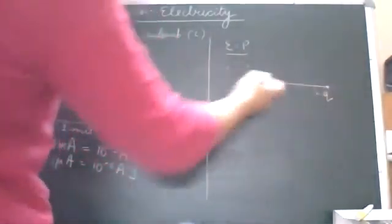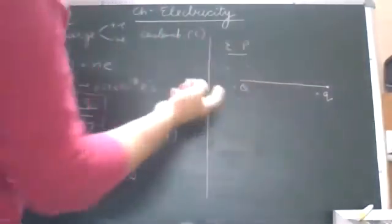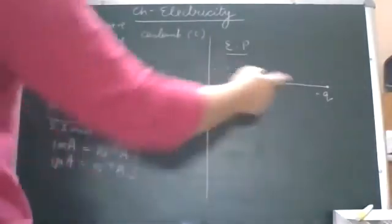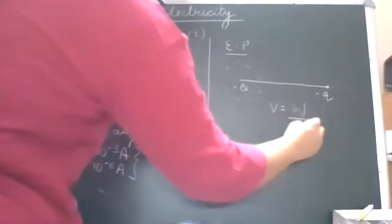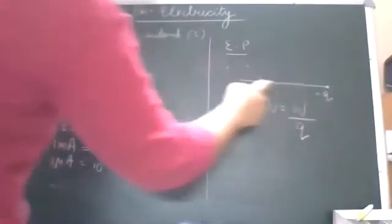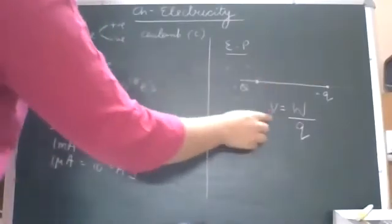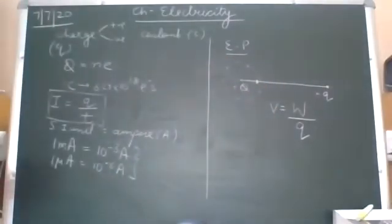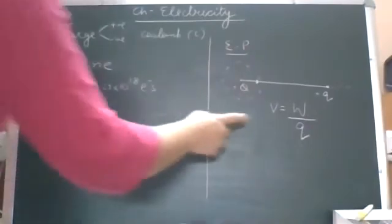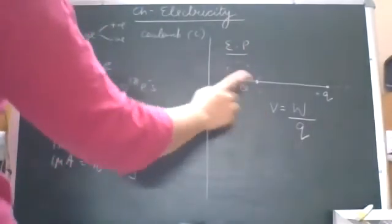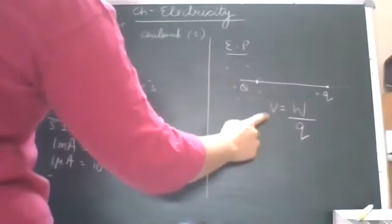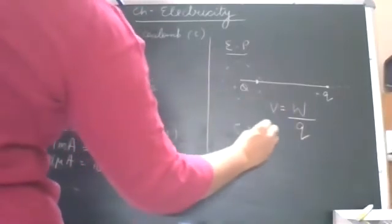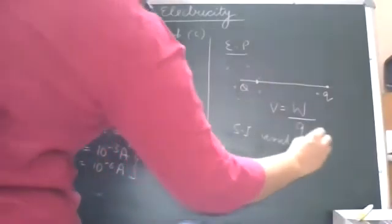So the electric potential is defined as how much work has to be done on the unit charge when it comes from infinity. The potential symbol is capital V and its unit is also capital V — don't get confused: V here is representing potential. The formula is V = W/Q, work upon charge. The SI unit of electric potential is Volt — what we call a battery of 5V or 10V refers to this.